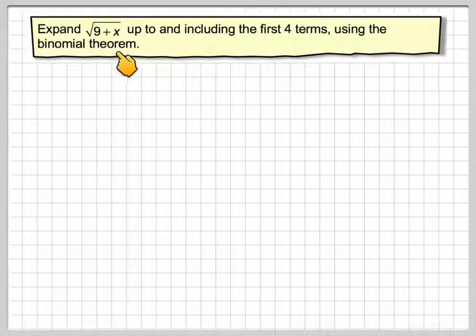Expand the square root of 9 plus x up to and including the first four terms using the binomial theorem.